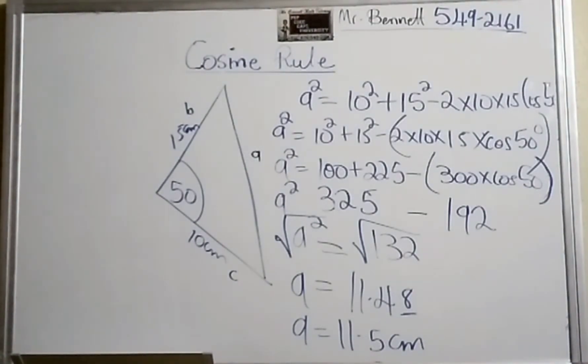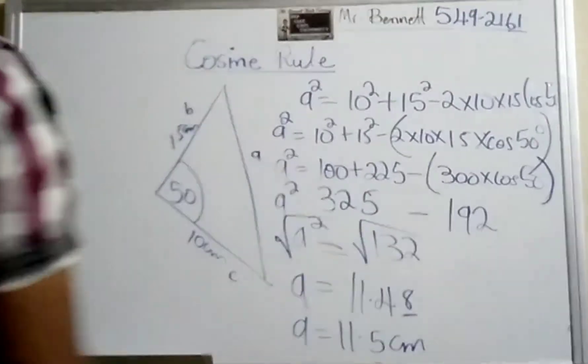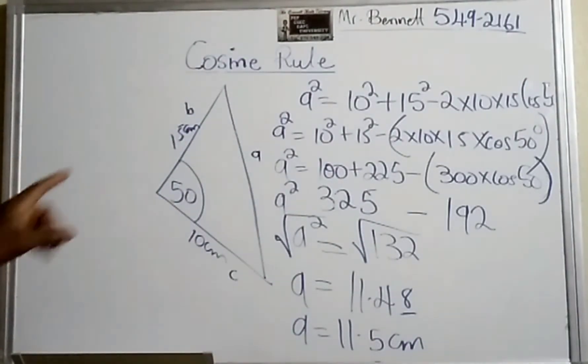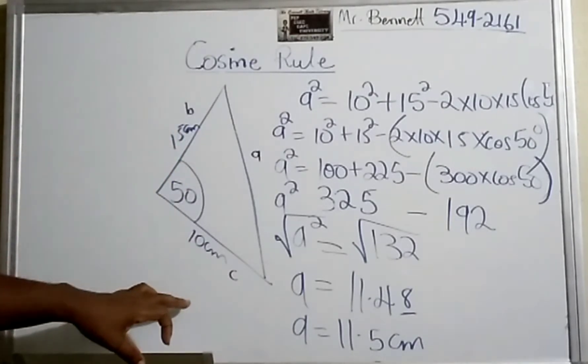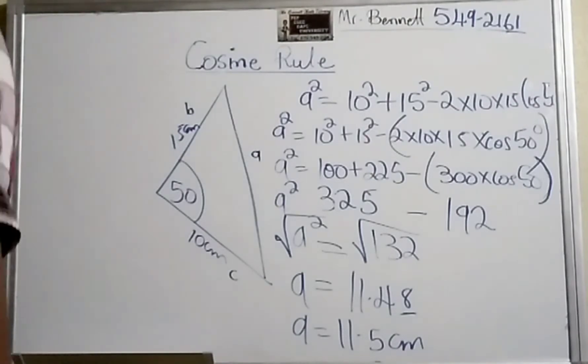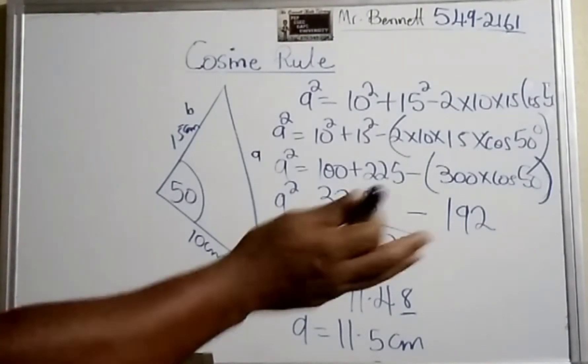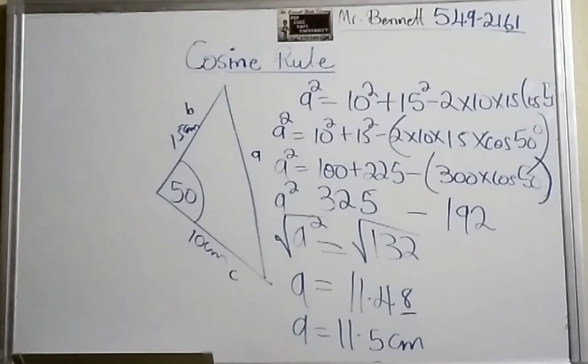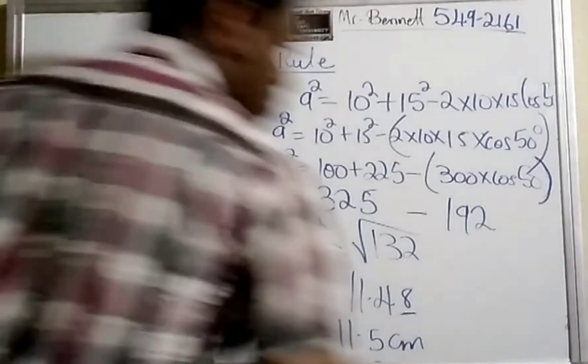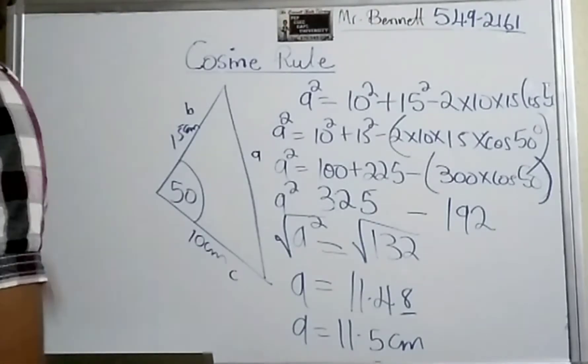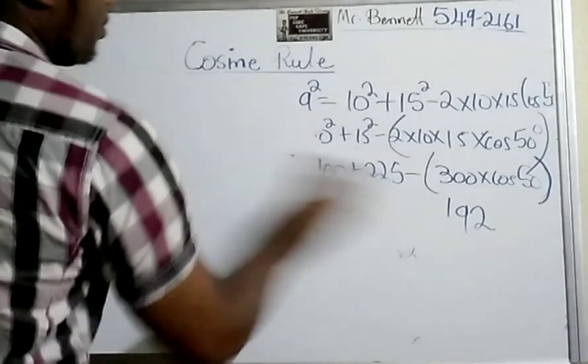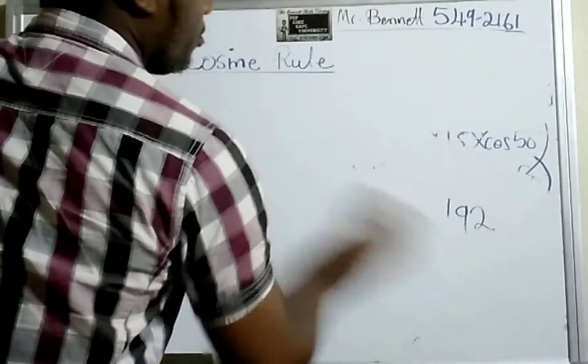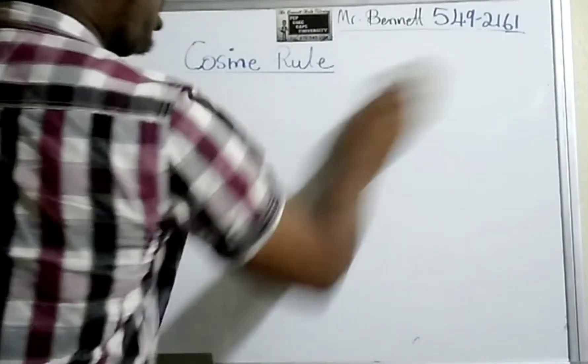The two conditions: it must not be a right angle triangle, and we must have an angle between two known sides. Then we can just go ahead and do it. Let us do one more example before we go. This is not very hard, so we will not spend a lot of time on it.